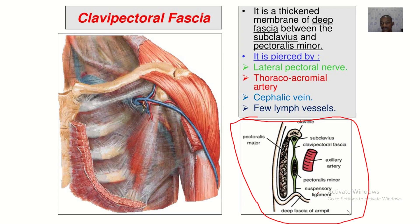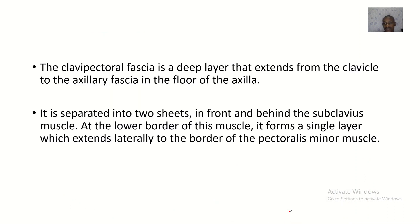This line in green here is your clavipectoral fascia. You can see that it extends from here upward — the attachment is the clavicle — then downward the attachment is the axillary fascia of the armpit. It is separated into two sheets in front and behind the subclavius muscle.